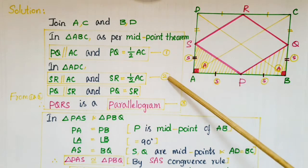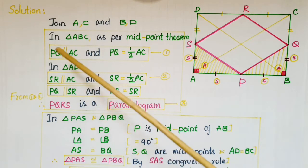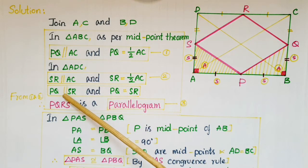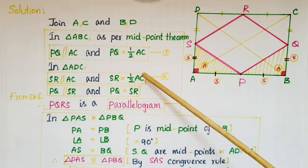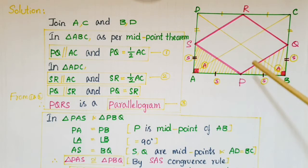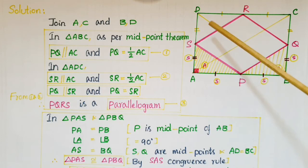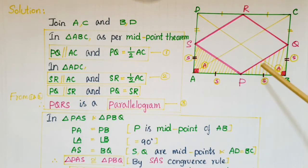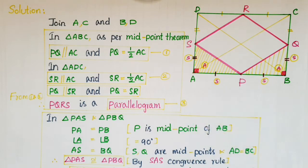From equations 1 and 2: PQ is parallel to AC and SR is parallel to AC, so PQ is parallel to SR. Also, PQ equals half of AC and SR equals half of AC, so PQ is equal to SR. In this quadrilateral, one pair of opposite sides is both parallel and equal, so PQRS is a parallelogram. This is the third equation.